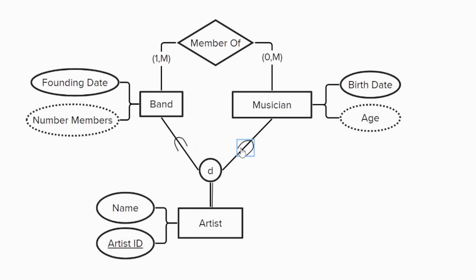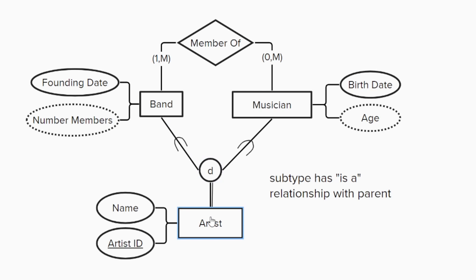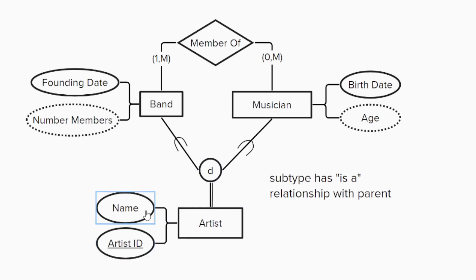Subtypes have an is-a relationship with their parent entity. Every musician is an artist and every band is an artist, which means that each inherits the attributes of an artist, namely an artist ID and a name. The D in the circle indicates that the two sets are disjoint — an artist is either a band or a musician, but not both.